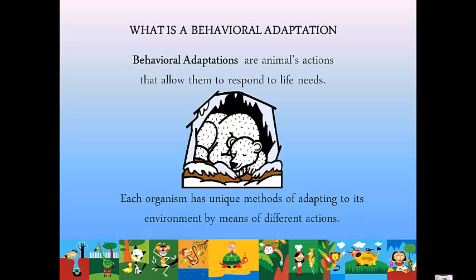Behavioral adaptations are animal's actions — not physical body parts, colorings, or anything physical. It's actually the actions of an animal that allow it to respond to life's needs. Each organism has unique methods of adapting to its environment by means of different actions — the behavior of an animal that helps it survive in its environment.